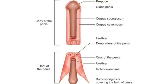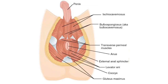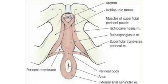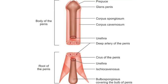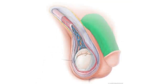The root of the p structure consists of the crura — singular form: crux — and the bulb, the ischiocavernosus muscle, and the bulbospongiosus muscle. The root is located in the superficial perineal pouch, which is between the perineal membrane superiorly and the deep perineal fascia inferiorly. The crura and the bulb contain masses of erectile tissue. Each crux is attached to the inferior part of the internal surface of the corresponding ischial ramus, anterior to the ischial tuberosity.